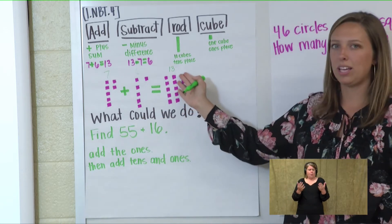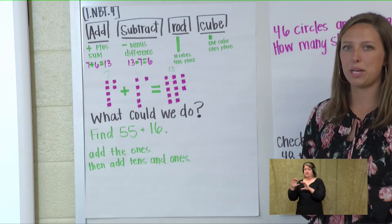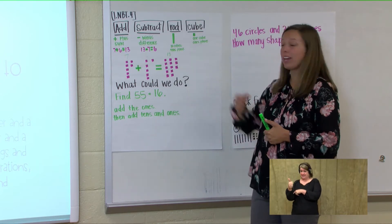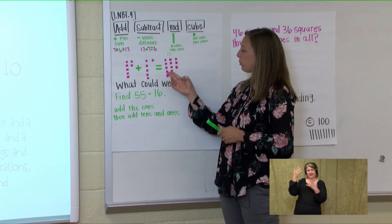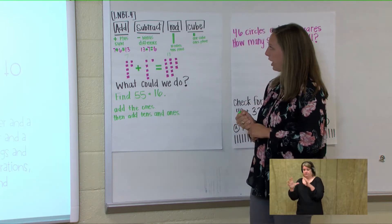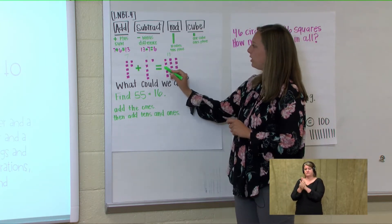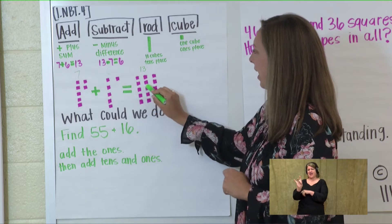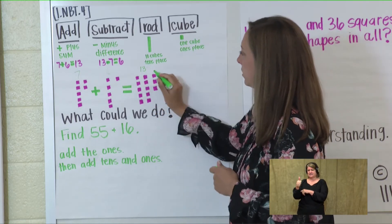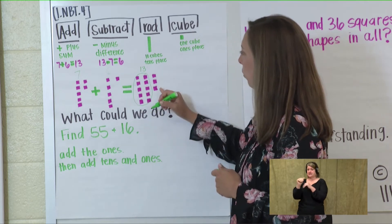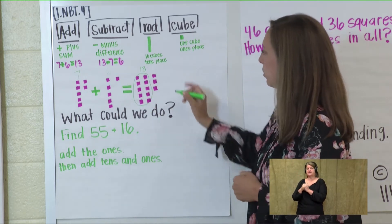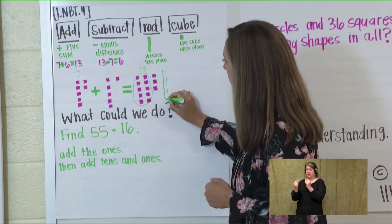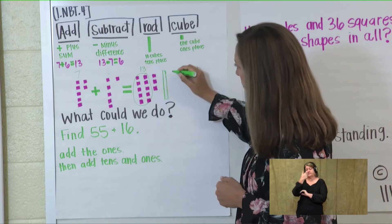What can we do to make this group of cubes smaller? If you said make a 10 or make a rod, kiss your brain! We're going to consolidate these into a rod and some cubes: 1, 2, 3, 4, 5, 6, 7, 8, 9, 10 — circle this because there's 10 — and 1, 2, 3. We can change that number of cubes into a rod because there's 10 cubes in a rod, with 3 cubes left over.